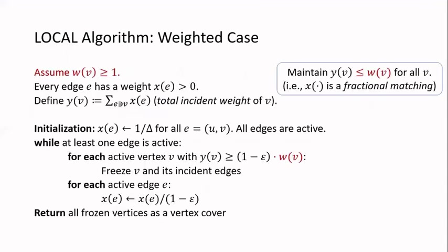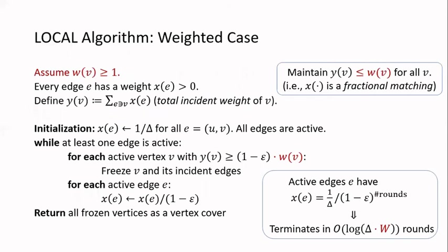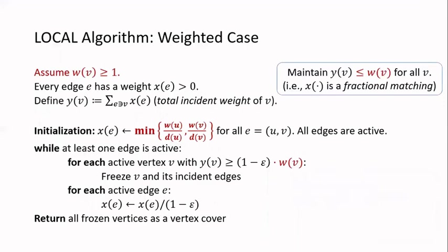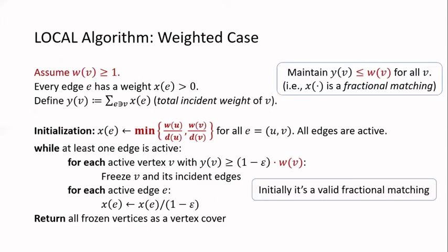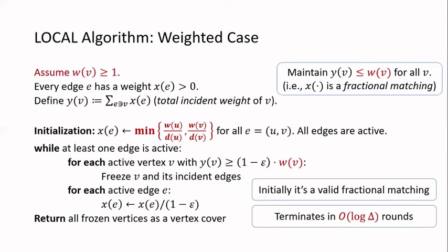Next, let's see how to handle the weighted case. We assume the vertex weight w(v) is at least 1. The previous local algorithm still works after some simple modifications, but the problem is that the round complexity would become log delta times the vertex weight, which is not good. To fix this, we use a non-uniform initialization: for edge uv, we set the initial edge weight to be the minimum of w(u) over degree(u) and w(v) over degree(v). We can check this gives a valid fractional matching, and the local algorithm will terminate in log delta rounds.